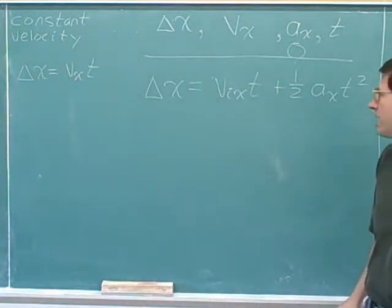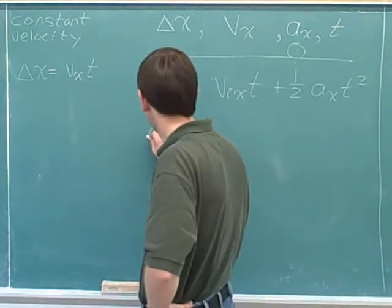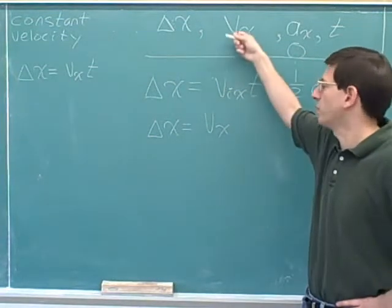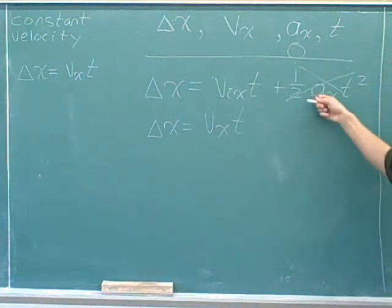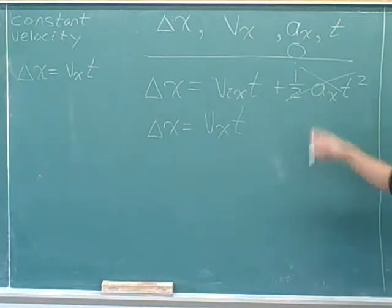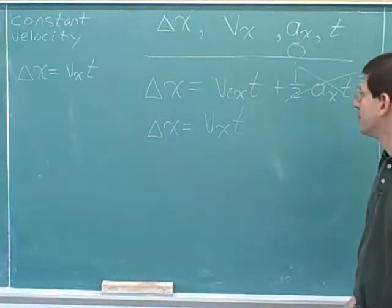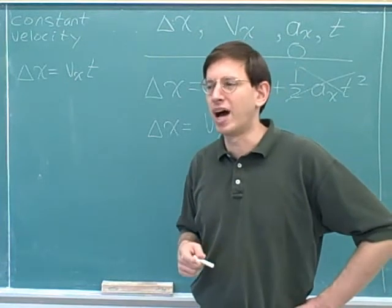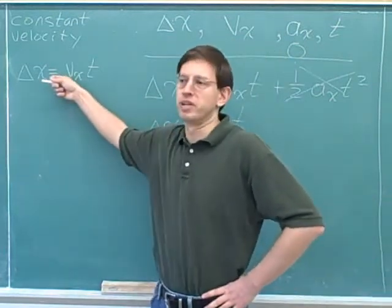Try to work out what's going to happen if we use this equation for a constant velocity problem. Well, we know that the initial velocity is just Vx — there's no point specifying that it's the initial velocity because we only have one velocity. And this term is going to drop out because the acceleration is zero. So we just get the same distance equals rate times time equation again. Some of the kinematics equations won't work, and the equations that do work just give you this simple formula that you can just start with anyway.